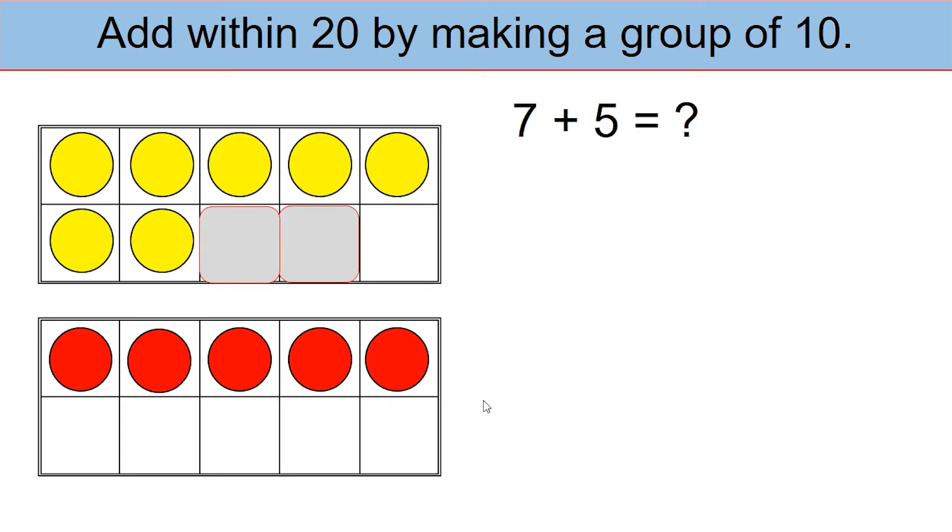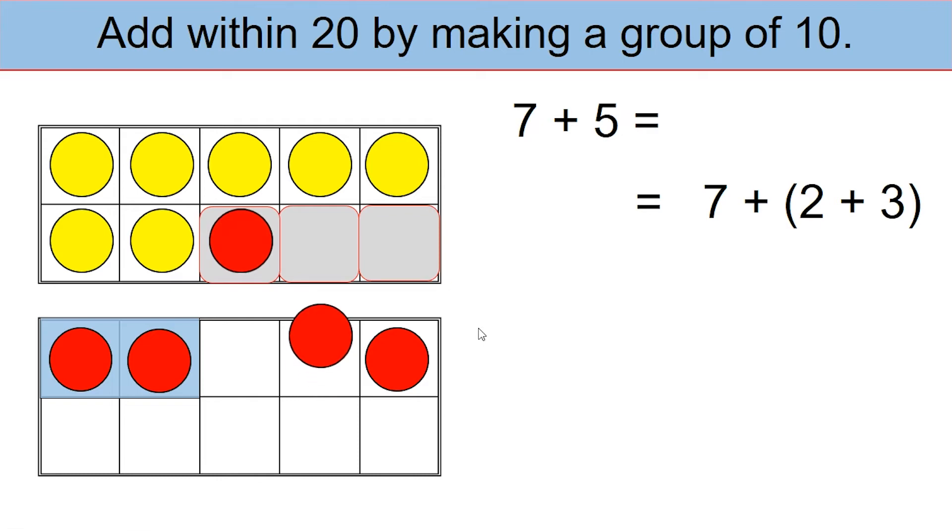As you can see in the first tens frame, you have 3 spaces blank. Had you had those counters in there, that would have made a 10. Since we are missing it, let's look to see what we can do. Let's rewrite the 5 as 2 plus 3. If we move the 3 red counters into the space, that will make a solid 10. Let's go ahead and do that. 1, 2, 3.